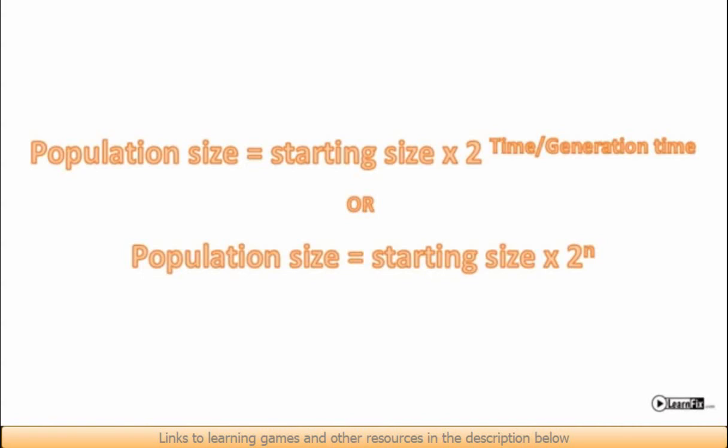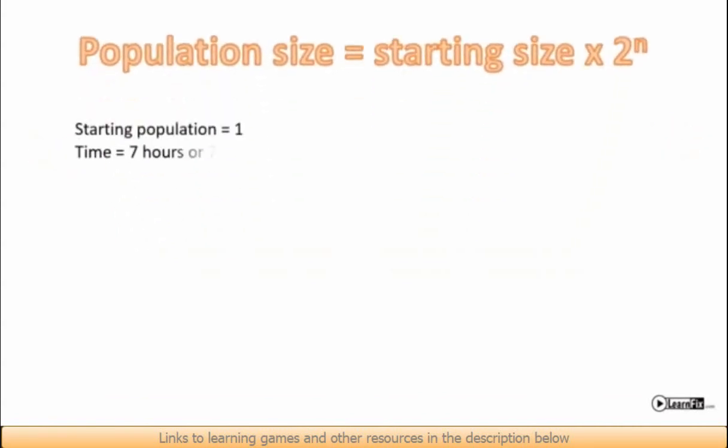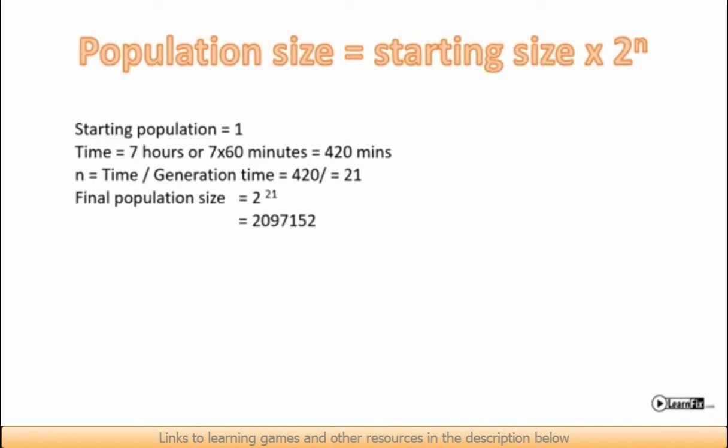Applying this to the example I just mentioned, the time is seven hours, which is seven times 60 minutes or 420 minutes. 420 minutes divided by the generation time gives n as 420 divided by 20, which is 21. So the population size will be 2 to power 21. So the population size is 2,097,152.